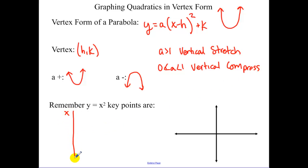Remember our key points that we're going to end up translating. We start with negative 2, we get 4. Negative 1, we get 1. 0, 0. 1, 1.